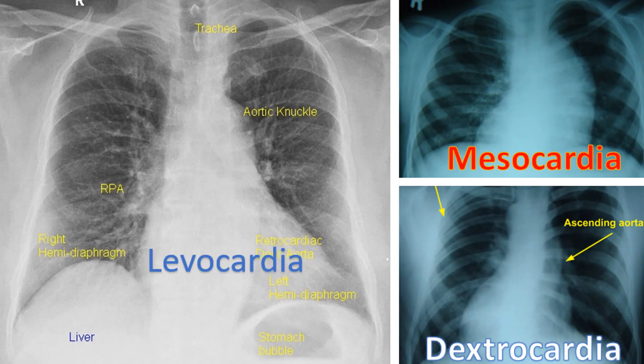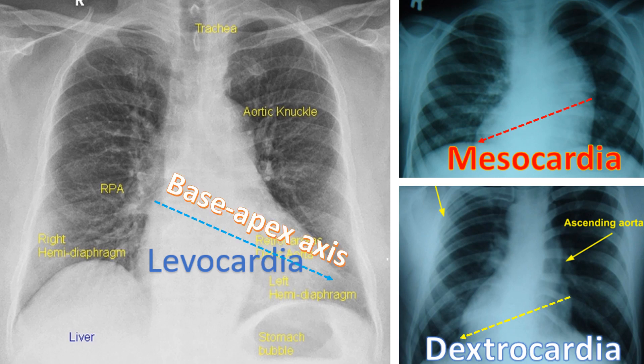Cardiac position is described as levocardia, mesocardia, and dextrocardia, depending on the location of the cardiac mass within the thorax. The base-apex axis is also considered in differentiating between levocardia and dextrocardia. Usually, the base-apex axis and the cardiac position based on the cardiac mass in the thorax are concordant.